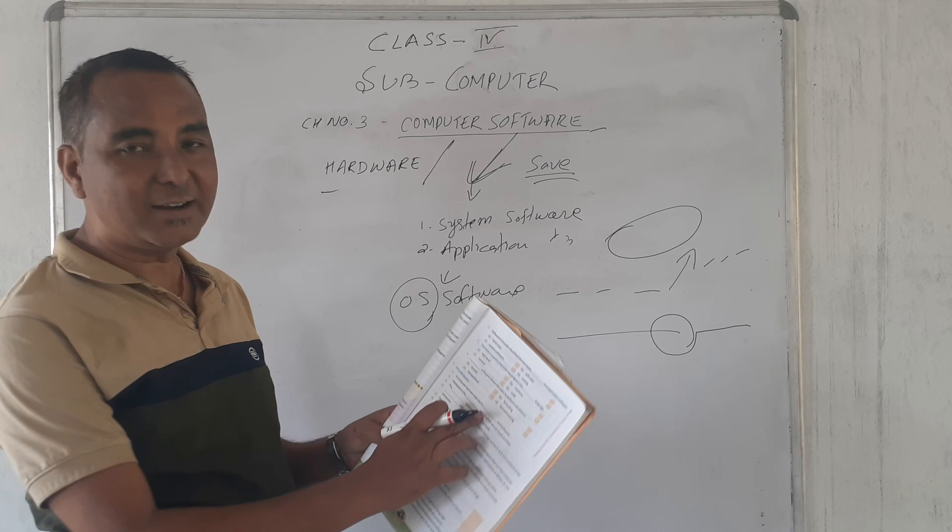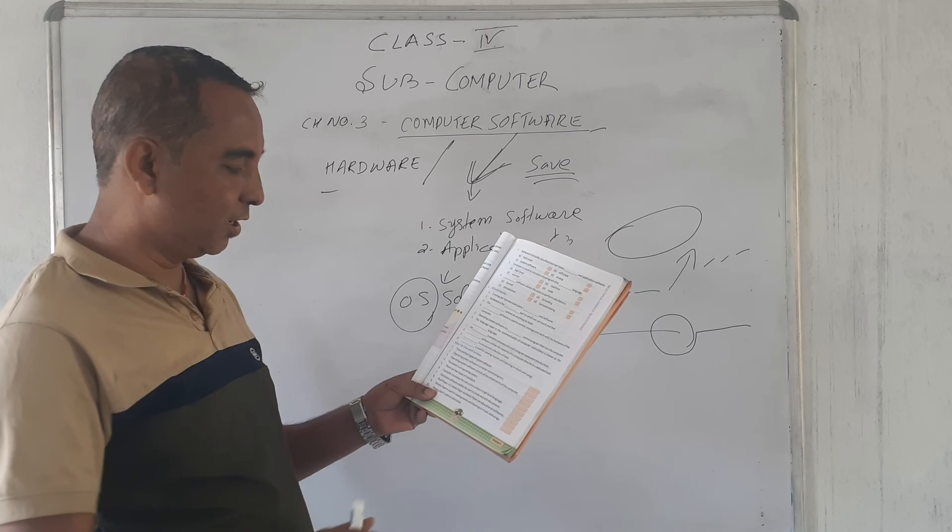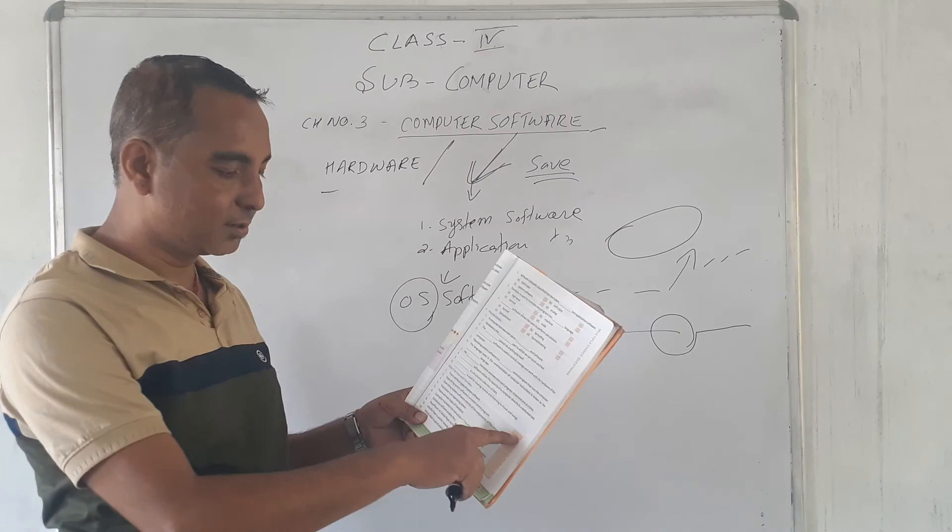And use true, false. Write true or false. Don't write T and F. You have to write complete true and false. The same. Understood? So, there are four types of system software. Is it true? No, false. Write it. So, same as, you do it continuously up to number 8. You do it in your book with a pencil. So, till then, thank you. Have a nice day.